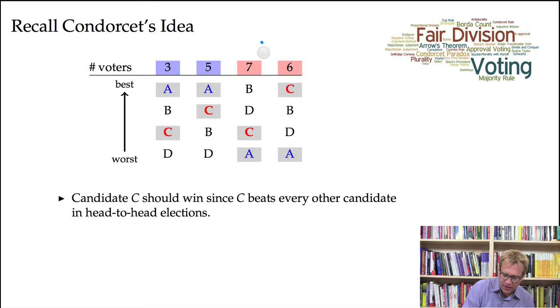So when we compare candidate C with, for example, candidate A, we see that C ends up with 13 votes, and 8 people rank A above C. So 13 people rank C above A, but only 8 people rank A above C. So C beats A in a head-to-head election.